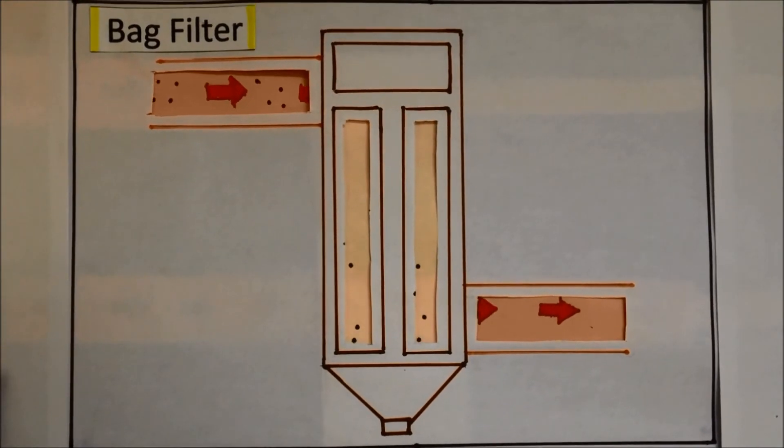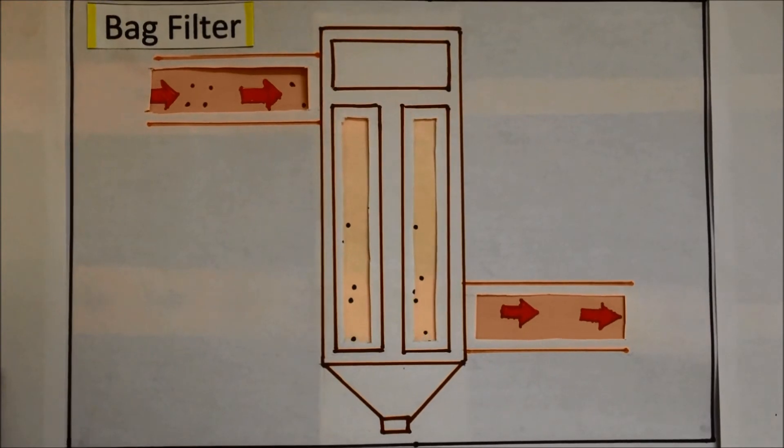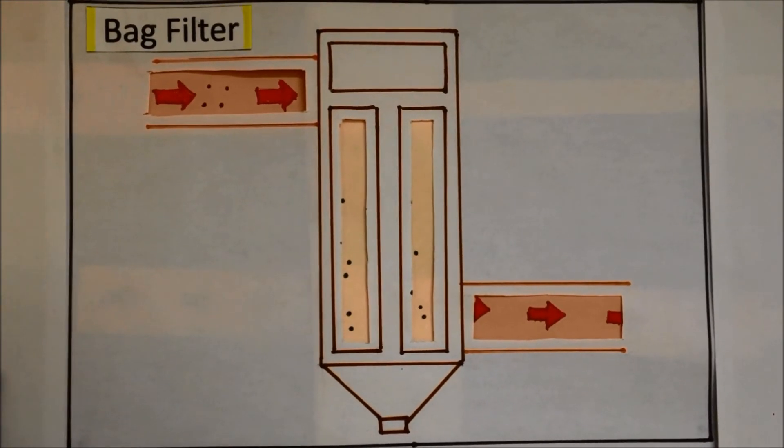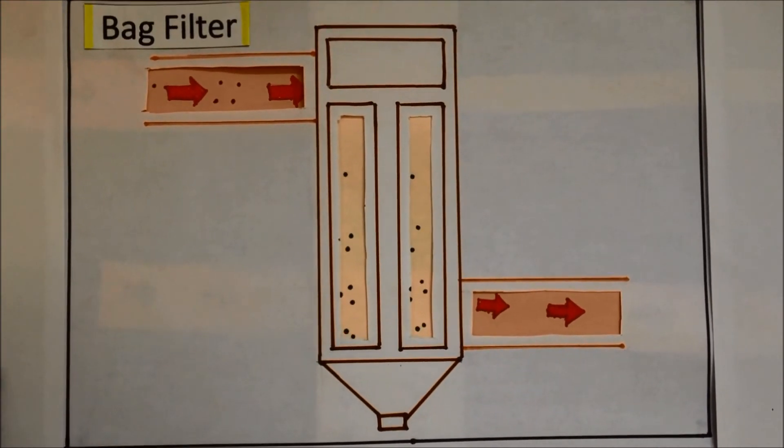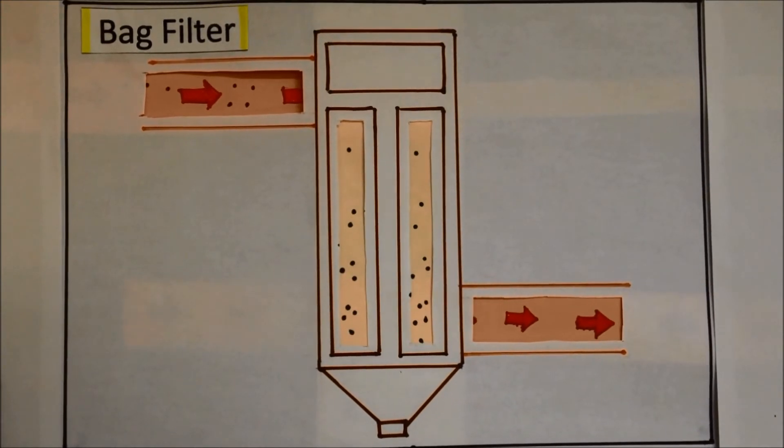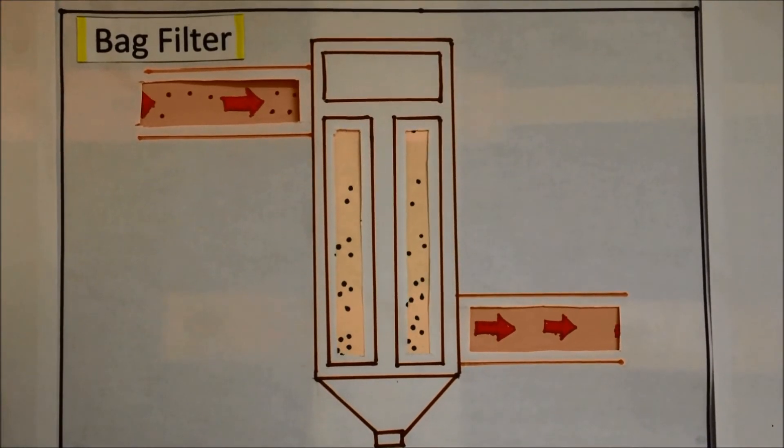Fine particles escaped from the cyclone are conveyed to the bag filter. The bag filter recovers the fine particles. The air coming out of the bag filter is dust-free and conforms to pollution control norms.